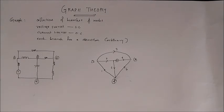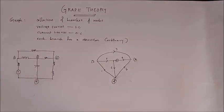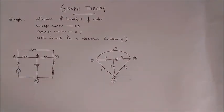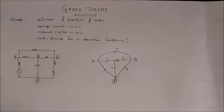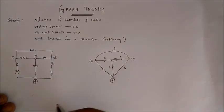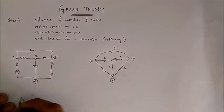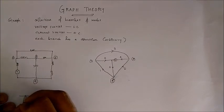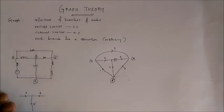Now let's move on to trees and links. To obtain the tree of a graph we need to find a path that connects all the nodes but does not provide more than one path between any two nodes. One possibility of a tree for this graph uses the second, fourth, and fifth branches — all nodes are connected but between any two nodes there is only a single path.